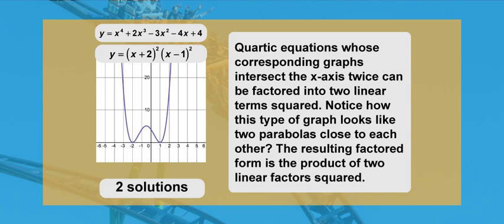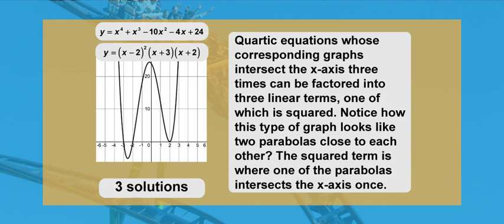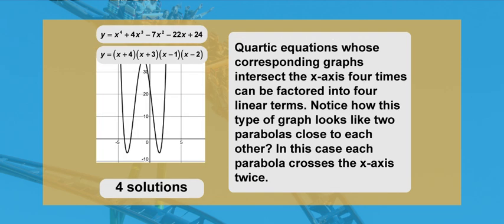Quartic equations whose graphs intersect the x-axis twice can be factored into two linear terms squared — notice how this type of graph looks like two parabolas close to each other. Quartic equations whose graphs intersect the x-axis three times can be factored into three linear terms, one of which is squared; the squared term is where one of the parabolas intersects the x-axis once. Quartic equations whose graphs intersect the x-axis four times can be factored into four linear terms, with each parabola crossing the x-axis twice.